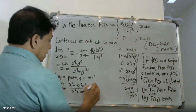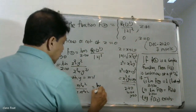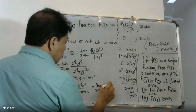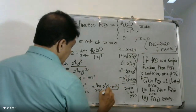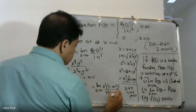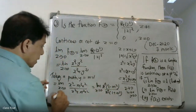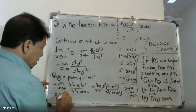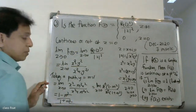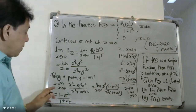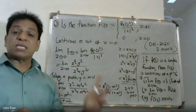Simplifying: the limit as x tends to zero of x squared times (1 minus m squared) divided by x squared times (1 plus m squared). The x squared terms cancel, giving the value 1 minus m squared divided by 1 plus m squared.